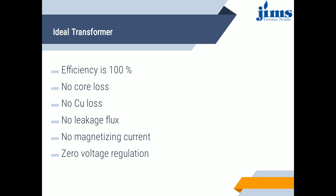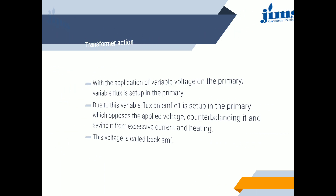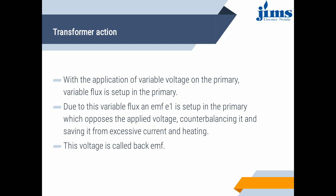No iron loss means hysteresis and eddy current losses in the transformer core are zero. Since there is no winding resistance, copper loss is zero, and since iron loss is also zero, obviously the efficiency will be 100%. Zero magnetizing current: the core has infinite permeability and zero reluctance, so zero magnetizing current is required for establishing the precise amount of flux in the core. Thus, the ideal transformer consists of two purely inductive coils wound on a loss-free core.